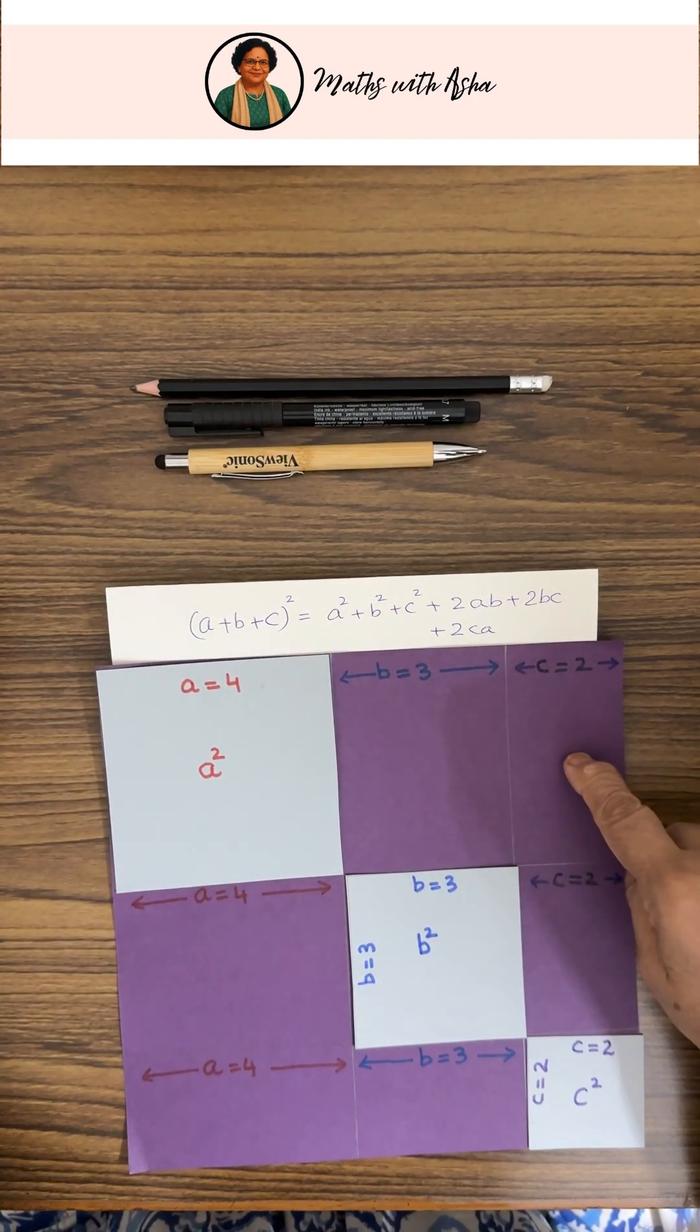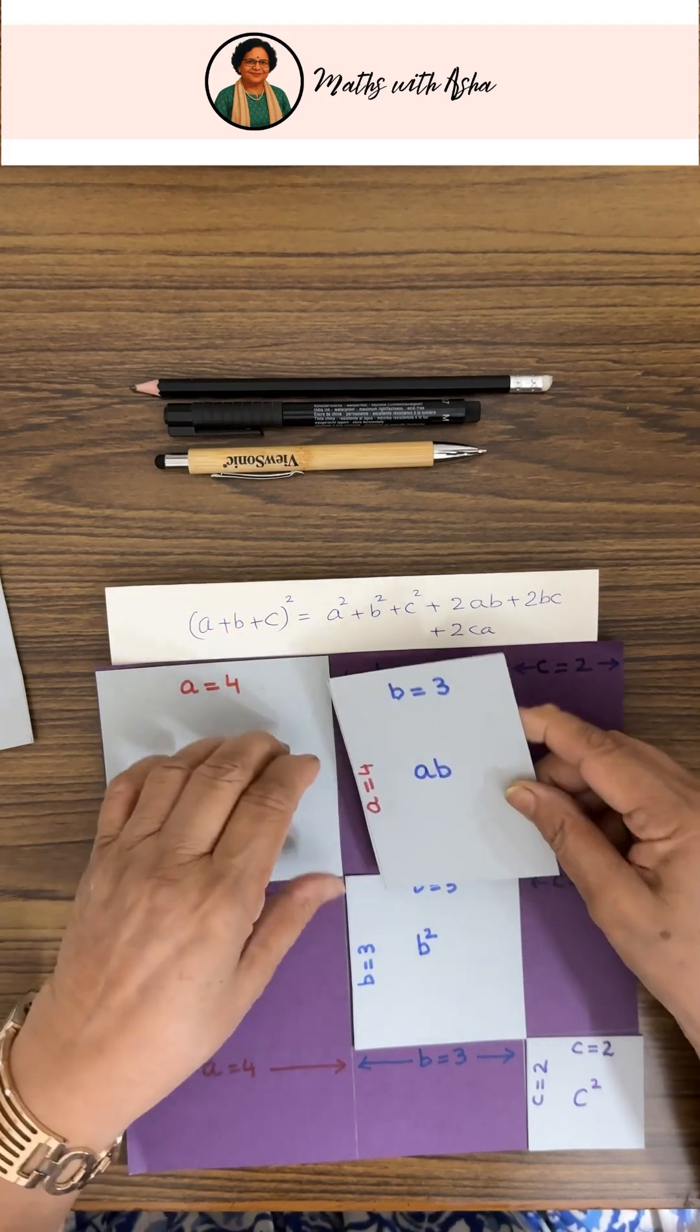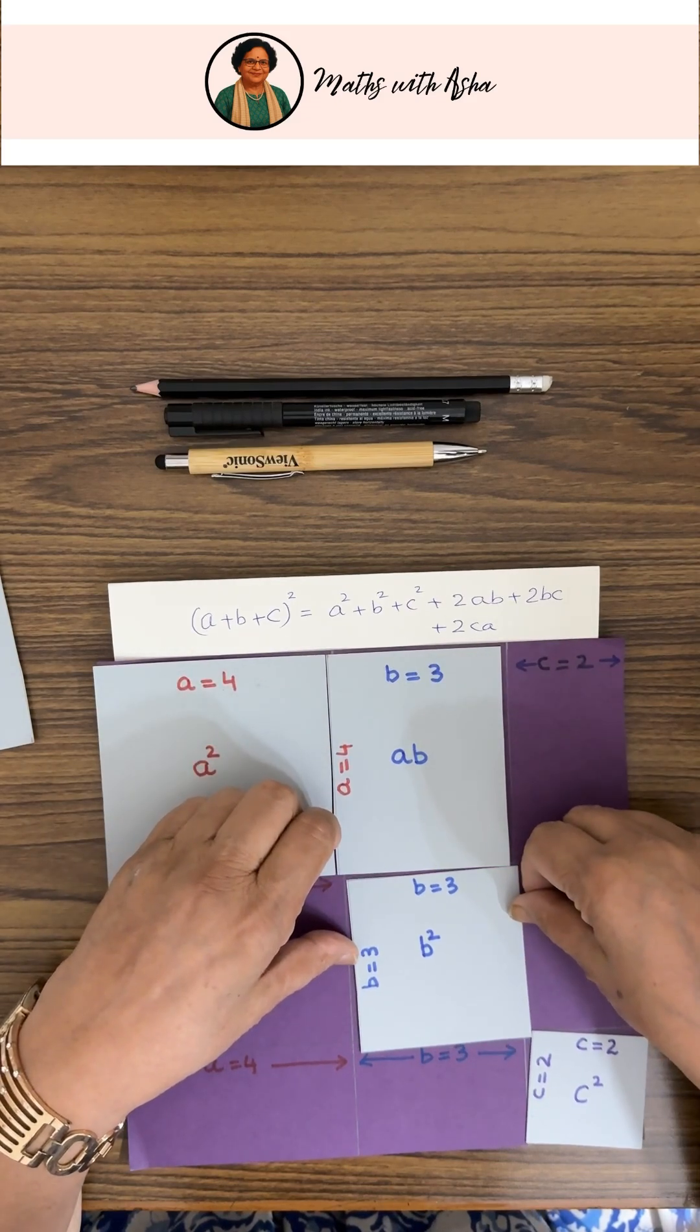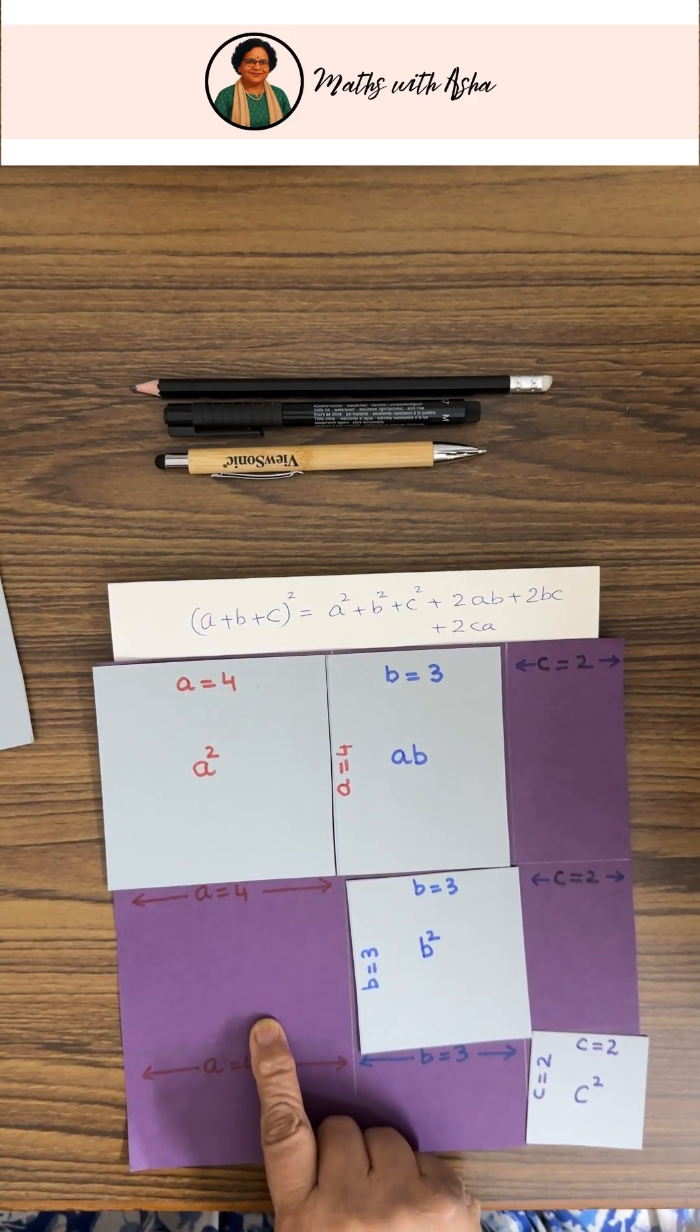Now this is your a into b. So this is your ab, one ab, and this is also a into b.